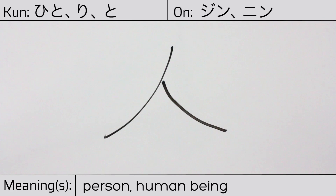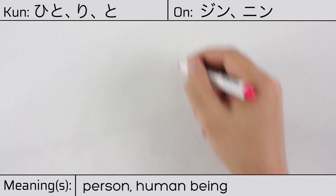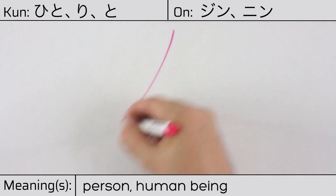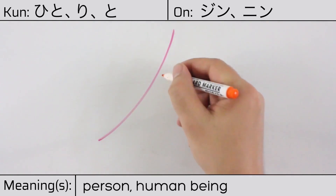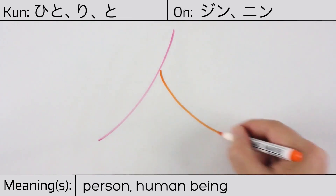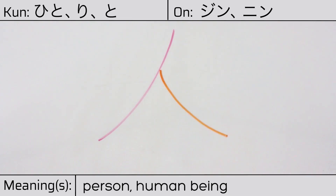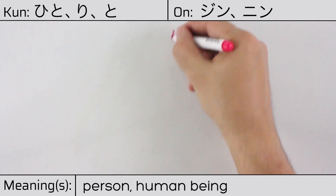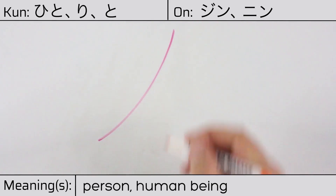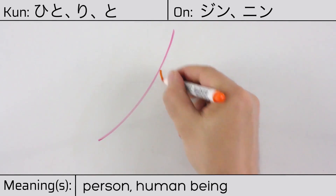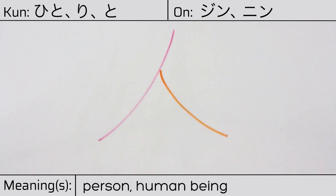This character has no radicals, but is itself a radical in many other composite kanji. You can remember this kanji by thinking of it as looking like a person, if you draw a stick figure with arms and a head.